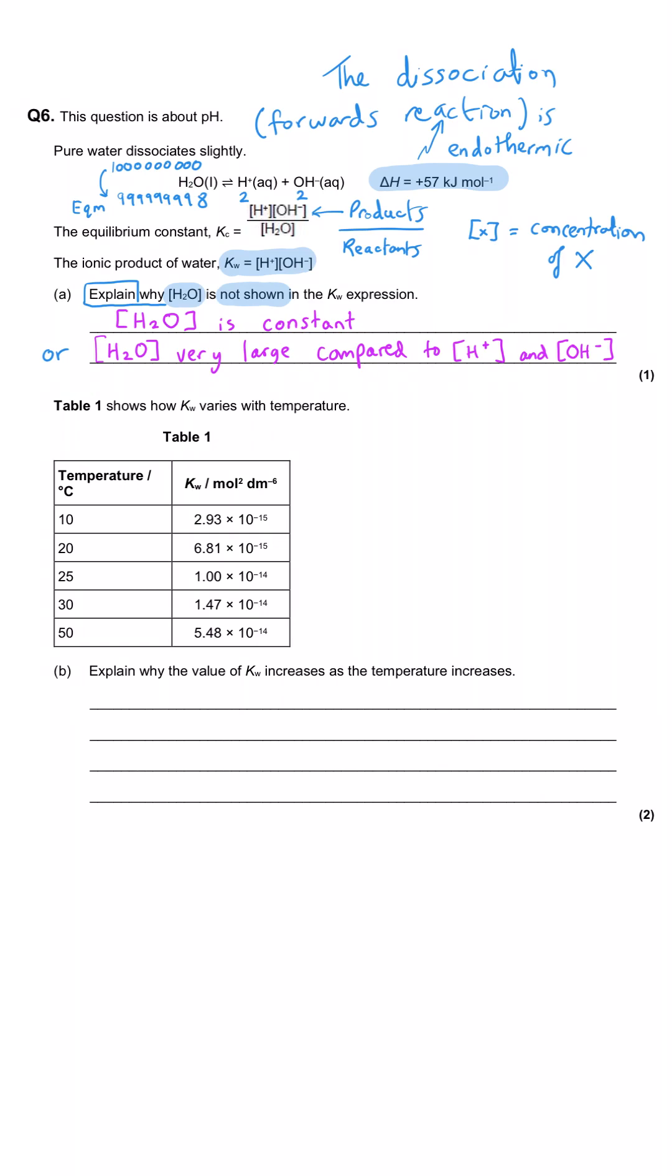The concentration of water is effectively a constant, and certainly we can say that it's very large in comparison to the hydroxide ions and the hydrogen ions. As a result, the Kw incorporates the water concentration into it. It's taken as the product of Kc multiplied by the concentration of the water. This equilibrium very much lies to the left-hand side.